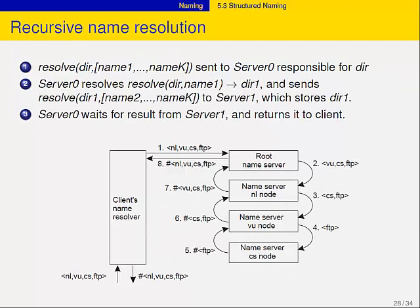In recursive name resolution, everybody is kind to you. You forward your request to your local name resolver, it hands over the entire name, and the root says: I'll return you the address — I don't know it right now, but I know where the nl server is. I'll pass the whole name to that server, which passes it further down, and the answer moves back up the chain until the root name server returns the answer to the client. But this doesn't actually happen.